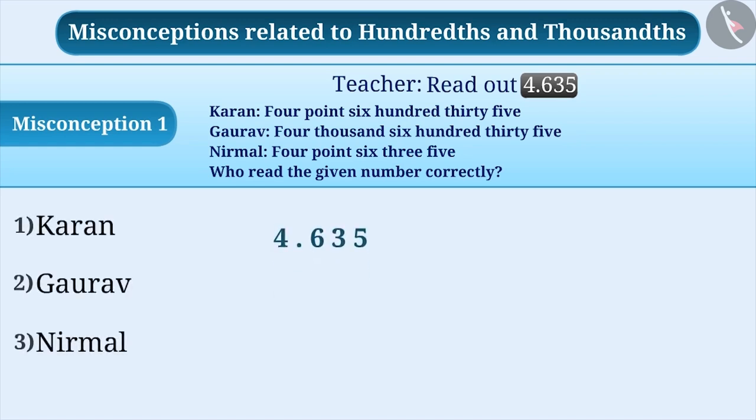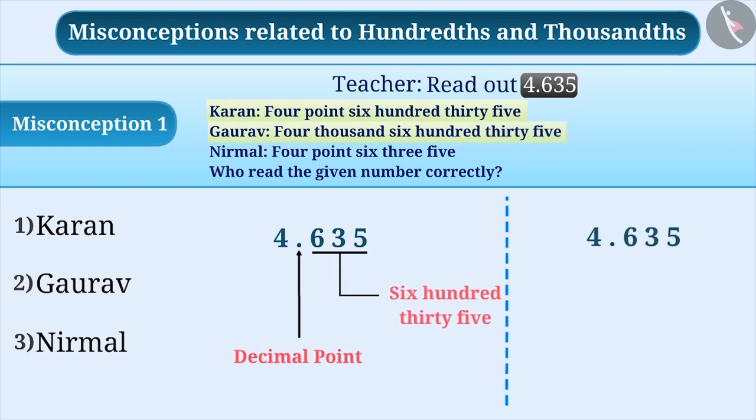Many times, decimal numbers are read incorrectly. Here, Karan read the digits after the decimal point collectively as one number, and Gaurav simply ignored the decimal point and changed the value of the number while reading it. Therefore, option 1 and option 2 are both incorrect.